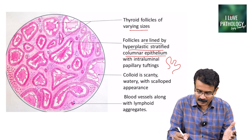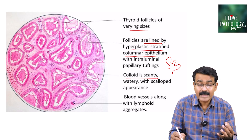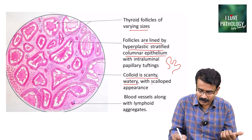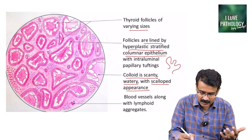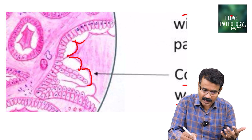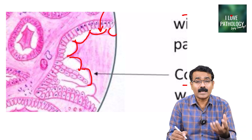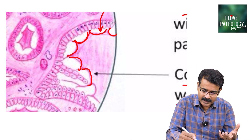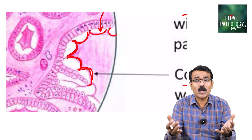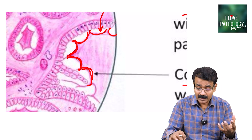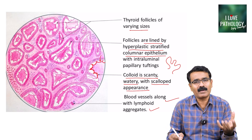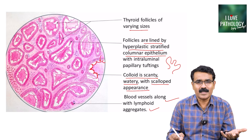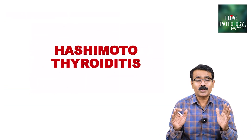The colloid is scanty because all the thyroglobulin in the colloid is used up. You can find a scalloped appearance at the edges of the colloid in the lumen — this is scalloping, because the hyperplastic thyroid epithelium utilizes the thyroglobulin for thyroxine production. The scalloped margins of colloid are a very characteristic feature of hyperplastic toxic goiter. You can also find lymphocytes and plasma cells in the stroma, since Graves disease is an autoimmune disease.